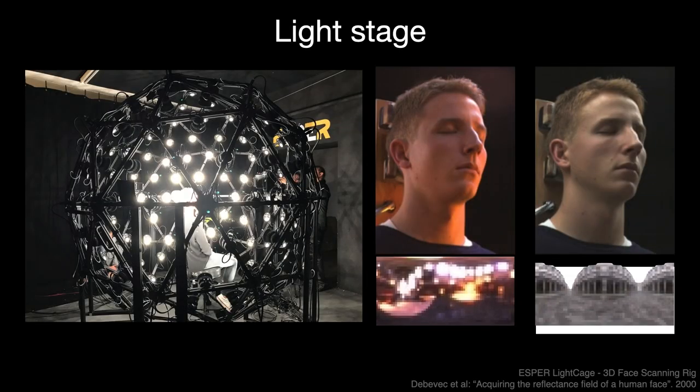A light stage captures detailed geometry and reflectance properties for a particular subject. This is useful for a number of applications, including portrait relighting, creating digital humans, and special effects. In many cases, however, we might want to do some of these same things on a subject that hasn't been captured by a light stage. After all, a light stage isn't always available.